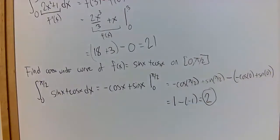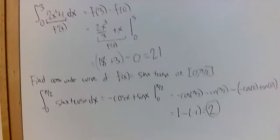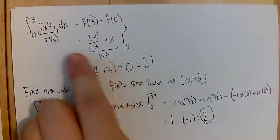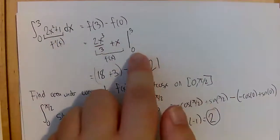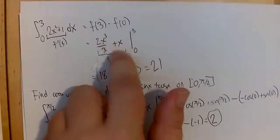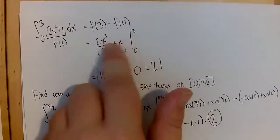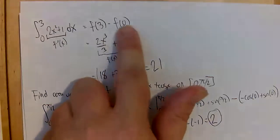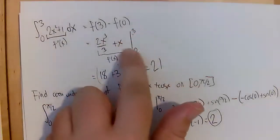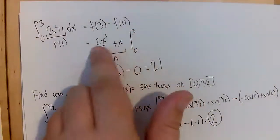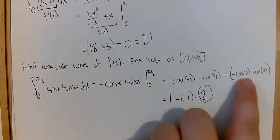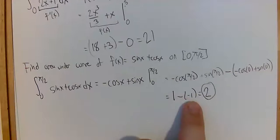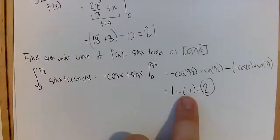I want to point out a common habit: for many functions, particularly polynomials, if you have zero as the bottom bound it often gives zero for the second evaluation. It's tempting to just ignore that term. But this example shows that even when we plug in zero, we can still get something non-zero. So make sure to always evaluate both bounds.